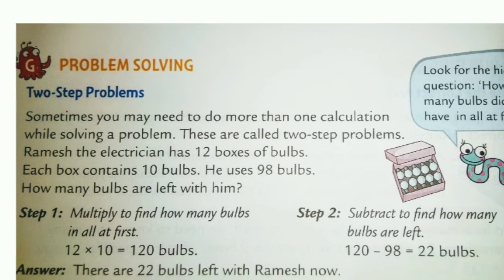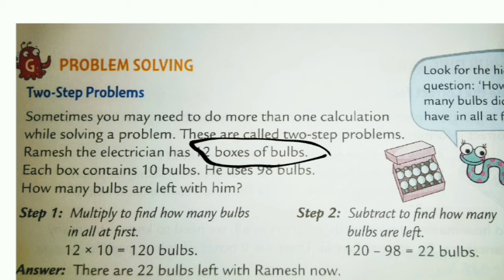Problem solving — two-step problems. Sometimes you need to do more than one calculation while solving a problem; these are called two-step problems. Question: Ramesh the electrician has 12 boxes of bulbs. Each box contains 10 bulbs. He used 98 bulbs. How many bulbs are left with him?